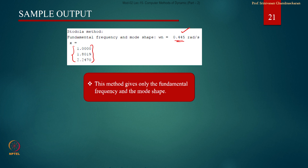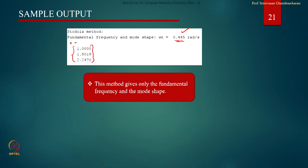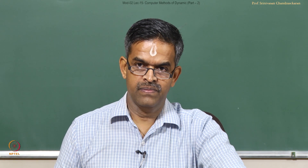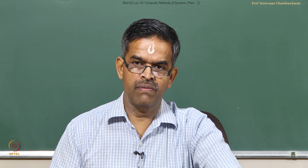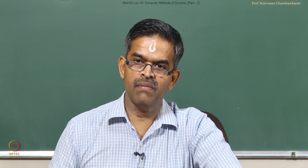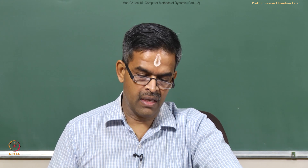The sample output from this code gives 0.445 and the eigenvector. This value closely agrees with the influence coefficient method result: 0.445 with vector [1, 1.8, 2.25]. The values are exactly matching, and surprisingly we had also obtained exactly the same values by hand calculation in the last lecture — so the computer program is exactly in line with the hand calculations discussed previously.